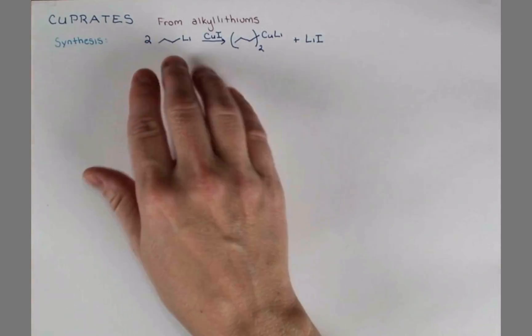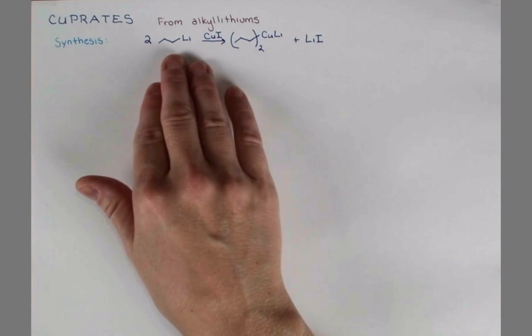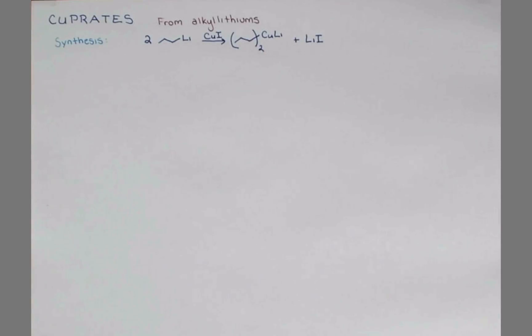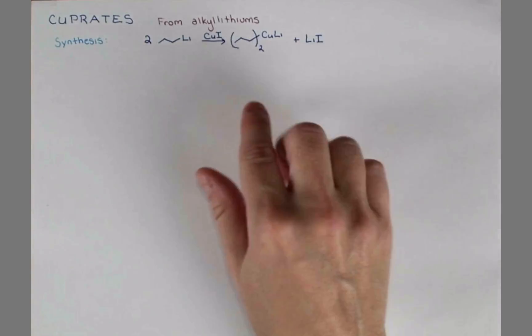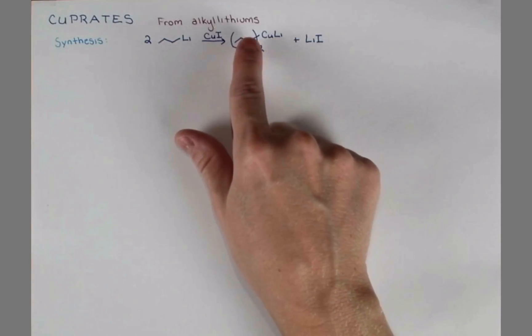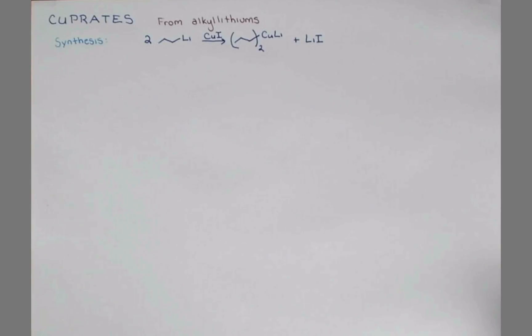Now this is a great reaction when you can buy your alkyl lithium, or maybe generate it in one step. But when you're synthesizing a more complex reagent in the lab that perhaps you want to convert into a cuprate, you probably don't want to go this route. So there ends up being two alkyl groups on here, but only one is transferred in the reaction.